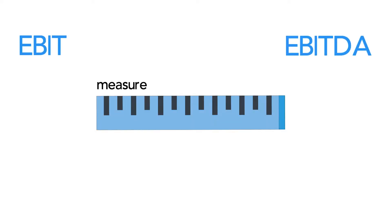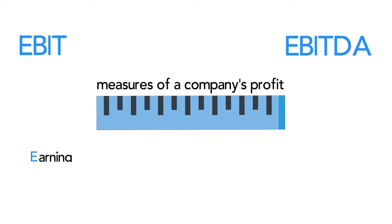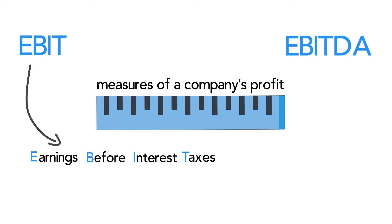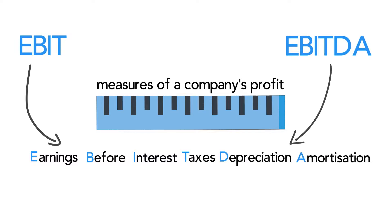EBIT and EBITDA are two measures of a company's profit. EBIT means earnings before interest and taxes. EBITDA means earnings before interest, taxes, depreciation and amortization.